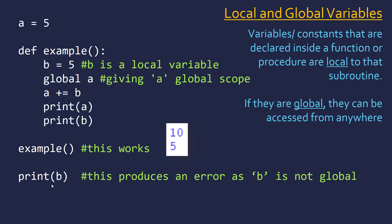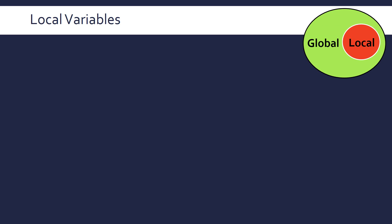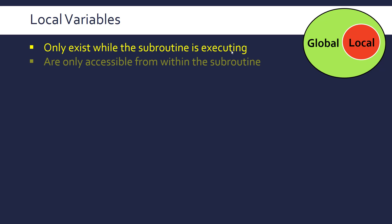When we try to print B on its own outside the subroutine, we get an error, because B is only accessible through the subroutine — it doesn't exist outside of it. You can visualise it like this: in green is the main program and in red is the subroutine. A local variable is only accessible within the subroutine, whereas a global variable can be accessed from anywhere in the program including from a subroutine. Local variables only exist when the subroutine is executing — they might as well not exist once the subroutine returns, and they're only accessible from within the subroutine.